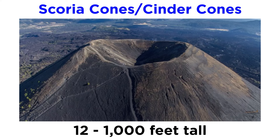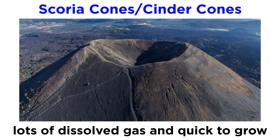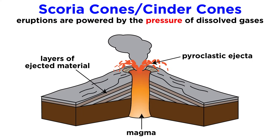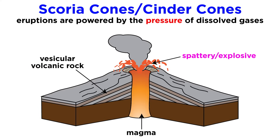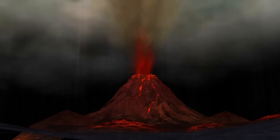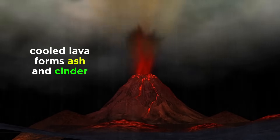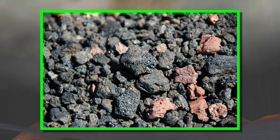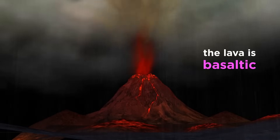Scoria cones, sometimes called cinder cones, are the smallest type of volcano, standing between a dozen and one thousand feet tall. They are notorious for their high dissolved gas content and quick-growing, short-lived nature. Eruptions are powered by the pressure of their dissolved gases, which come out of solution during eruption and get frozen into the newly formed rock — this type of volcanic rock is said to be vesicular. Scoria cone eruptions are spattery and explosive due to their high gas content.